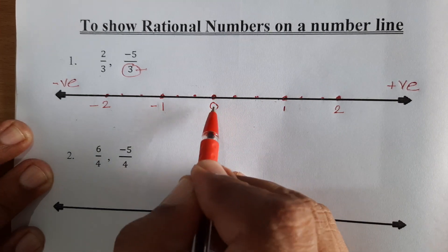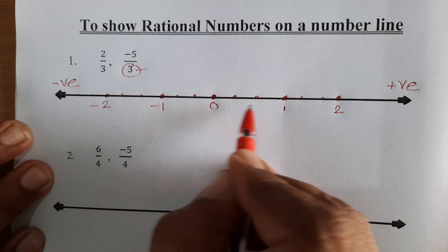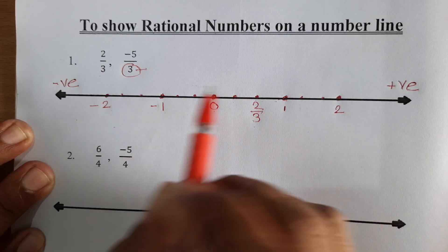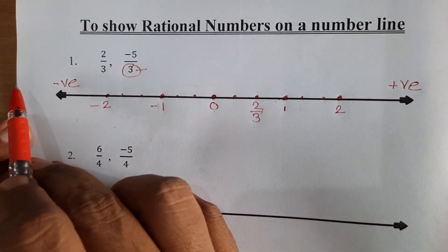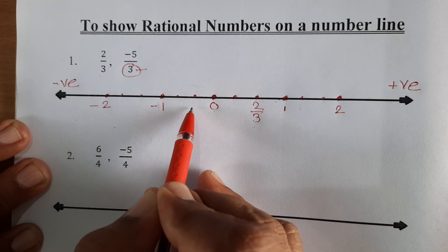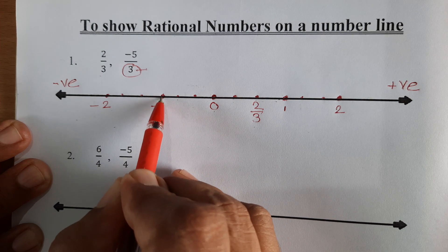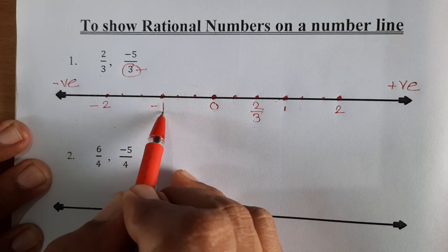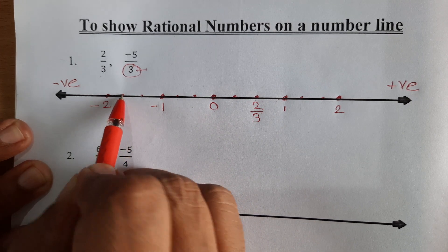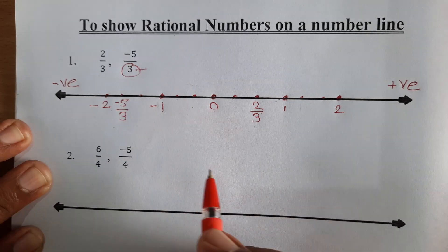This point shows 0. This is 1 upon 3 and this is 2 upon 3. Now, negative numbers on the left hand side: negative 1 upon 3, negative 2 upon 3, negative 3 upon 3. 3 upon 3 means negative 1. Then negative 4 upon 3 and it is negative 5 upon 3.